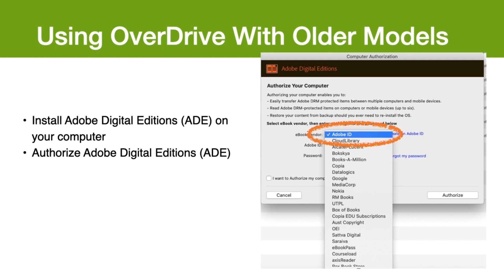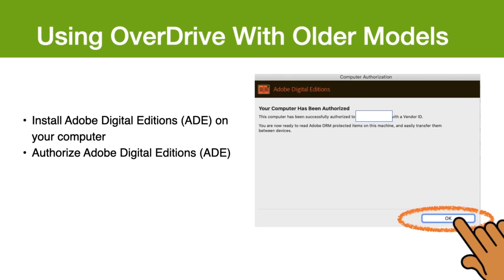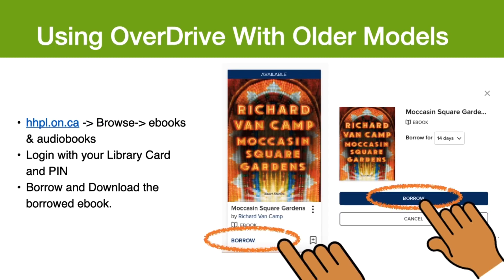To authorize your computer, you will need to log in with an ID, most likely an Adobe ID, but there are other options if you prefer. During the transfer process, your eReader will automatically be authorized with the same Adobe ID or Overdrive account you used on your computer. Once you have successfully logged in, your computer will be authorized to download the eBooks. On your computer, you can now download and borrow eBooks from Overdrive.